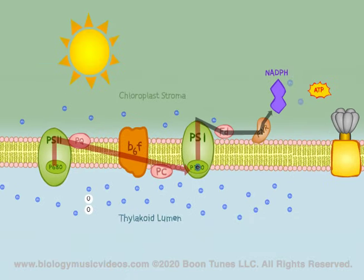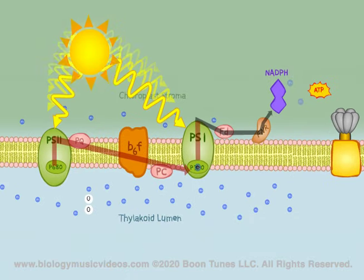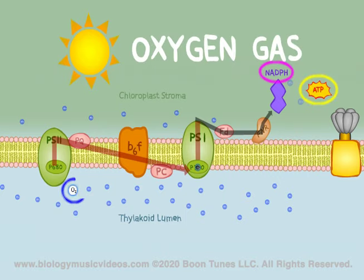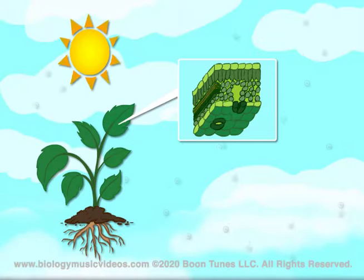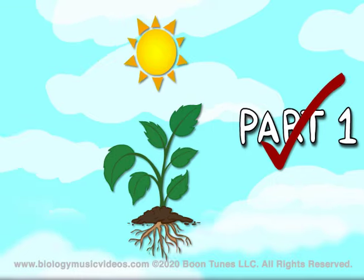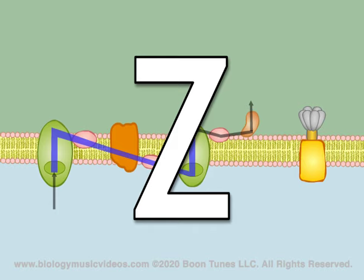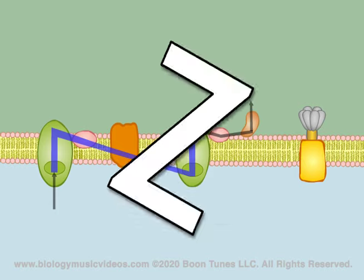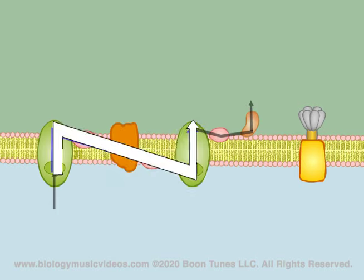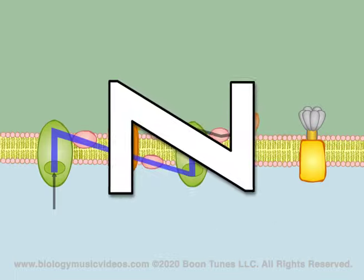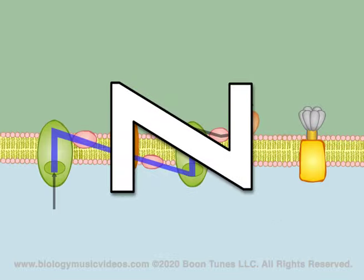So the products formed in the light add up to three if we count them right: ATP, NADPH, and oxygen gas the plant liberates. Part 1 is over, and as we've seen, the electrons traveled in a Z-scheme. They call it Z, but then again it looks more like a capital M.